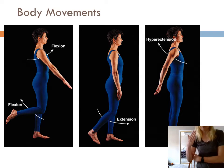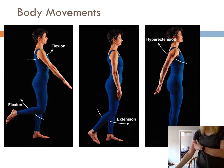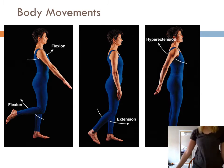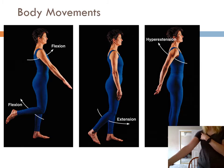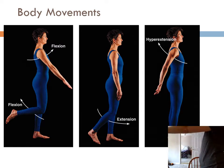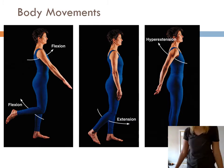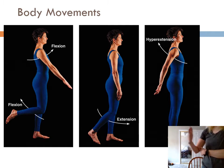The opposite movement is extension — increasing the angle between two body parts, so my upper arm and my lower arm. This is flexion, this is extension, always in anatomical position. We can do that at our shoulder: flexion, extension. At the wrist as well: flexion, extension.